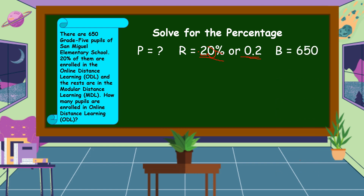And of course, the base is 650. What is the formula to find the percentage of a number? The formula is P is equal to R times B, where P is the percentage, R is the rate, and B is the base. Then we're going to substitute the value of R and B into our formula.